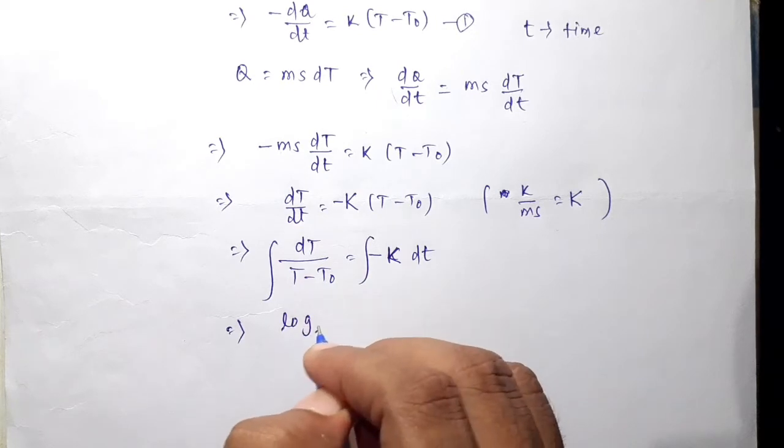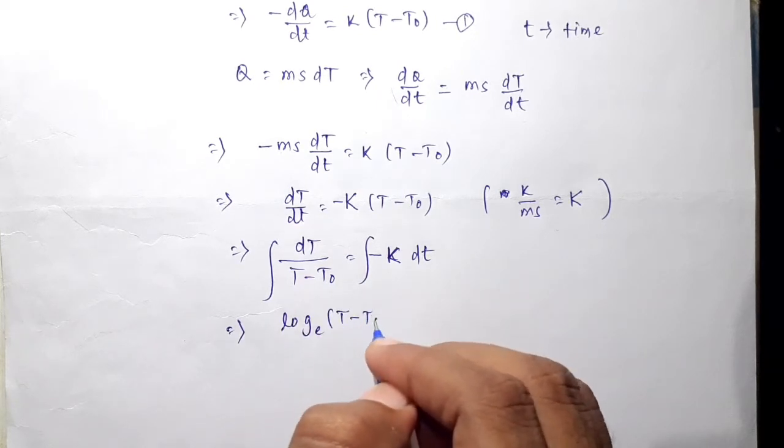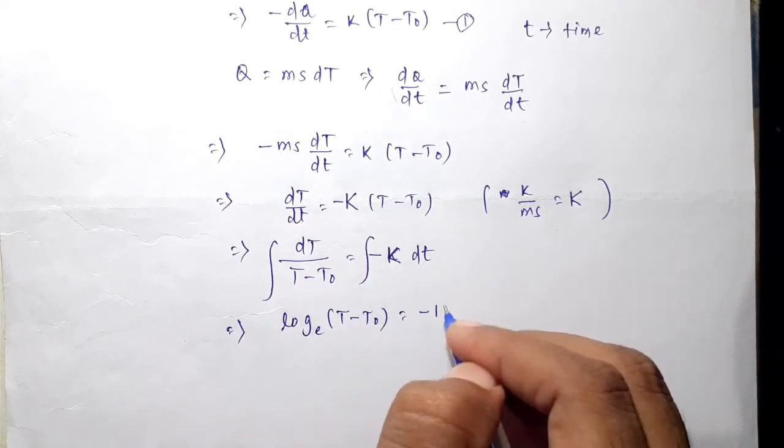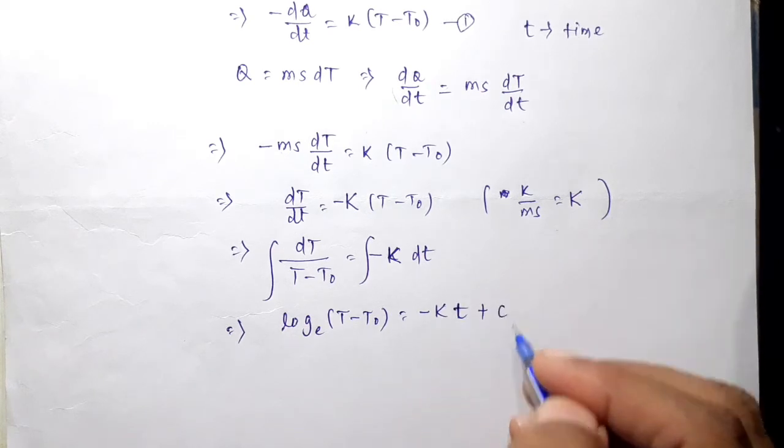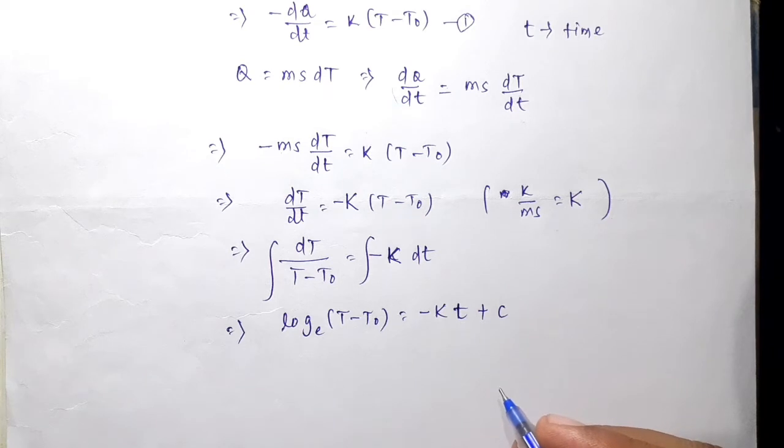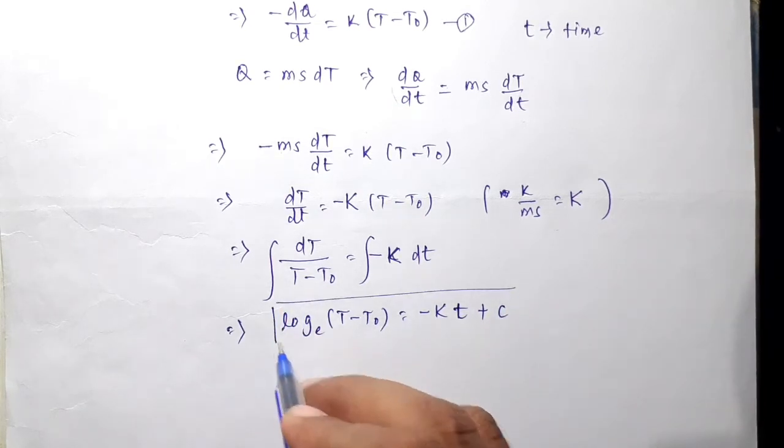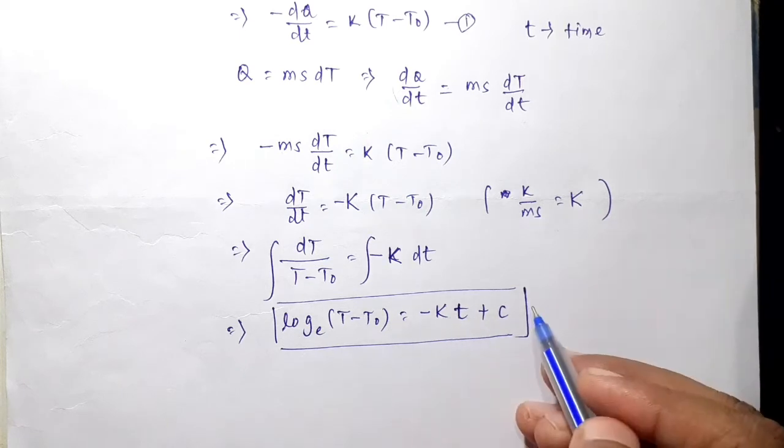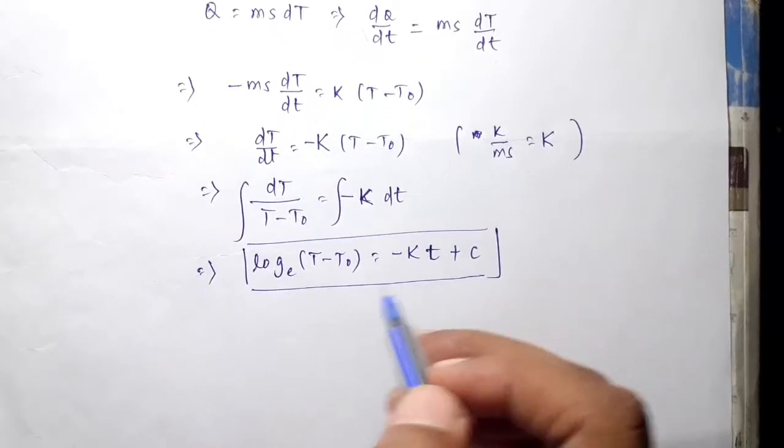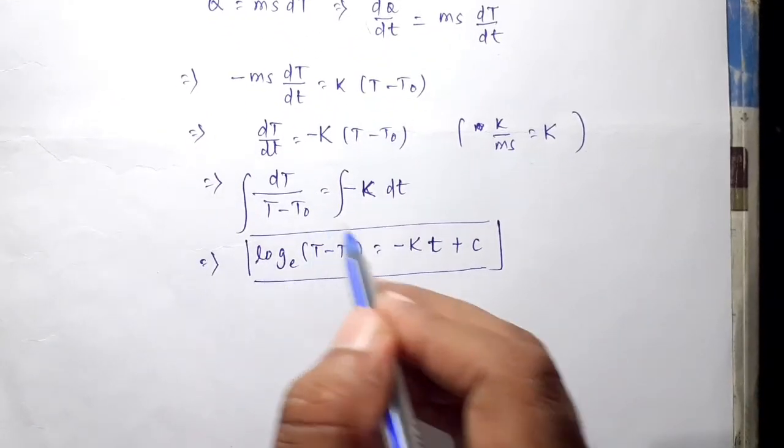I can write dT/(T minus T0) equals minus K dt. After integrating both sides, we find log of T minus T0 equals minus K·t plus some constant C. So we found that the logarithm of temperature difference log(T minus T0) equals minus K·t plus C.